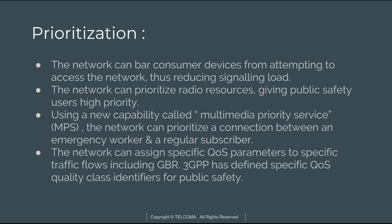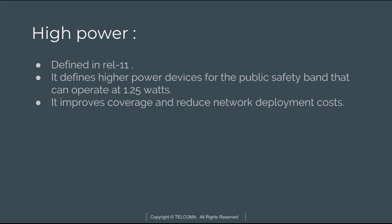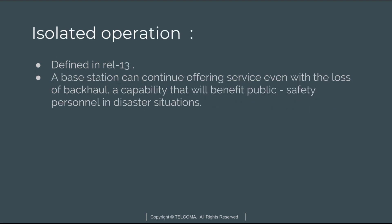This includes GBR — Guaranteed Bit Rate. 3GPP has also defined specific quality of service classes for public safety. The next feature is high-power devices, defined in Release 11. It defines high-power devices for the public safety band that can operate at 1.25 watts, improving coverage and reducing network deployment cost.